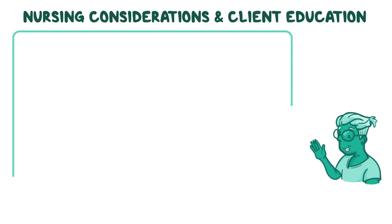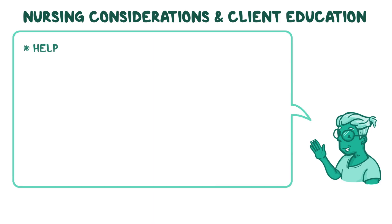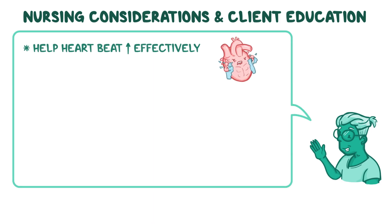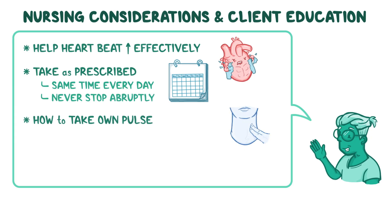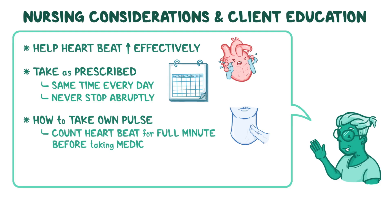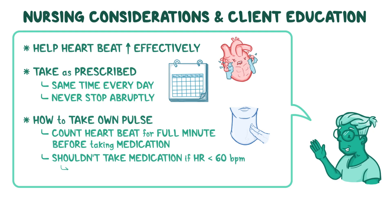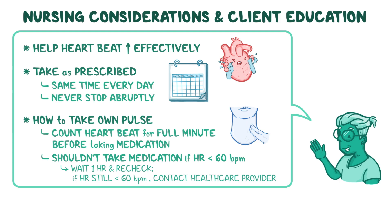Be sure to explain to your client how the medication will help their heart to beat more effectively, and stress the importance of taking the medication as prescribed, at the same time every day, and to never stop taking it abruptly. Then, teach your client how to take their own pulse and instruct them to count their heartbeat for a full minute before taking their medication. Advise them that they should not take the medication if their heart rate is less than 60 beats per minute. Instead, they should wait one hour and recheck their pulse, and if their heart rate is still less than 60 beats per minute, they should contact their healthcare provider right away.